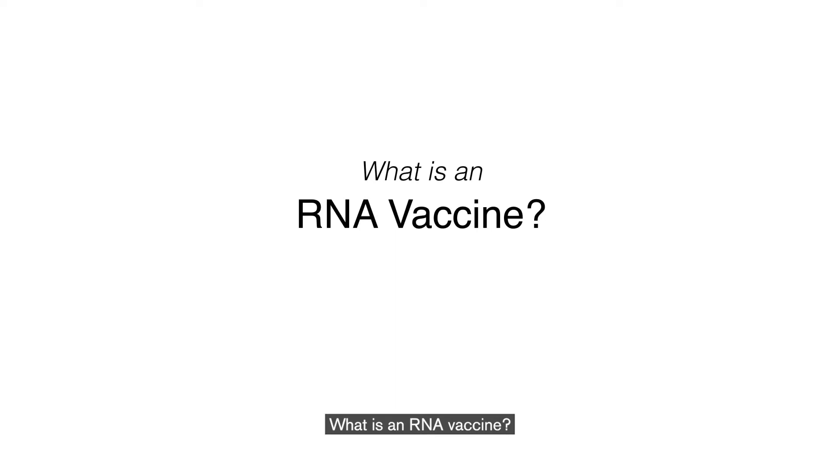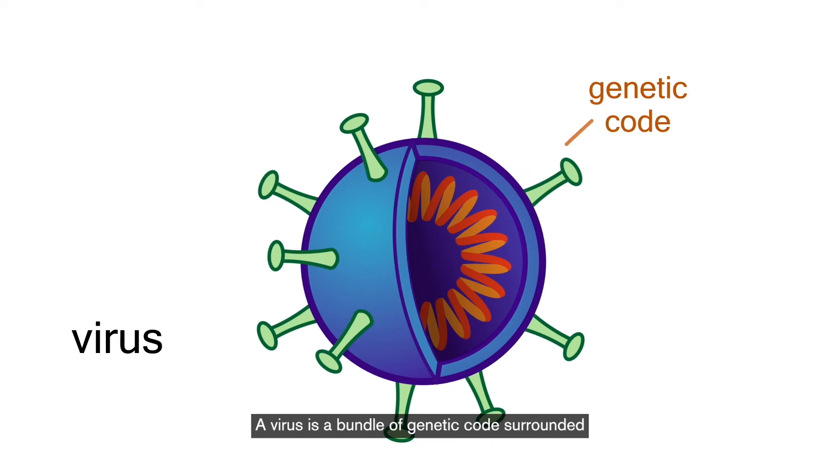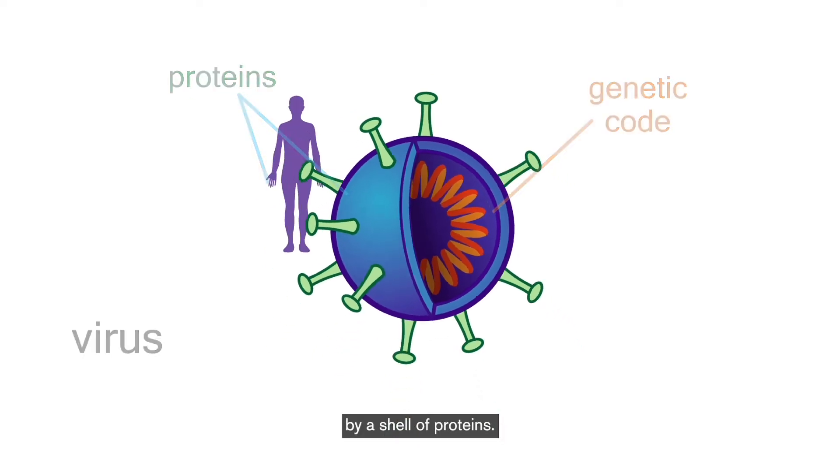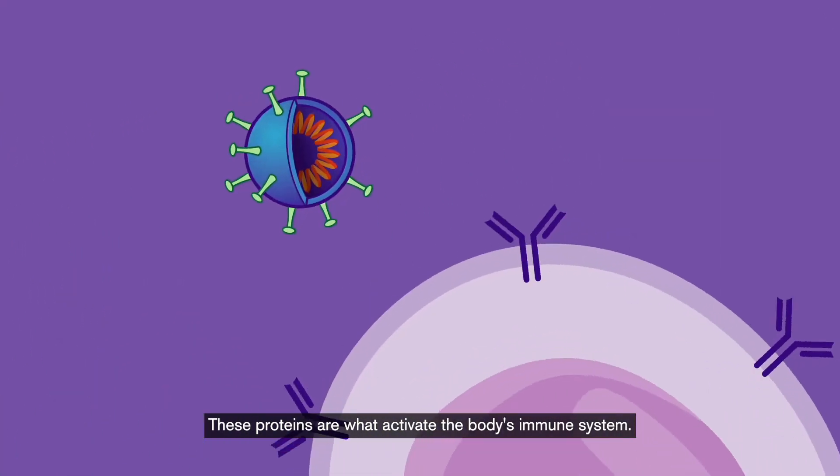What is an RNA vaccine? A virus is a bundle of genetic code surrounded by a shell of proteins. These proteins are what activate the body's immune system.